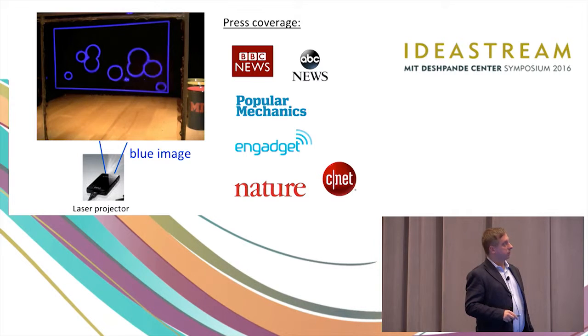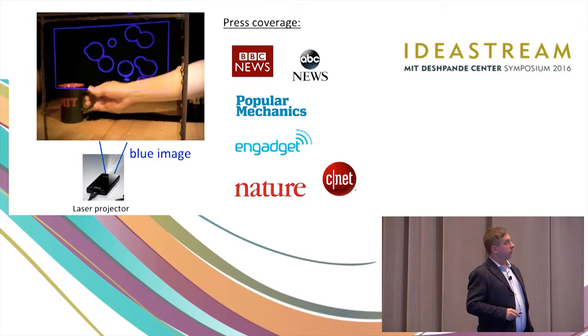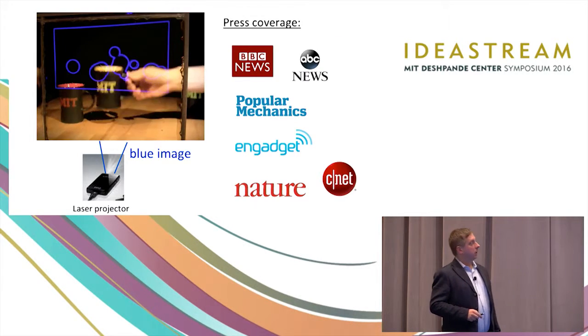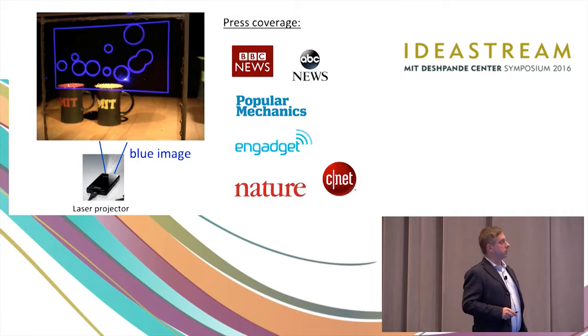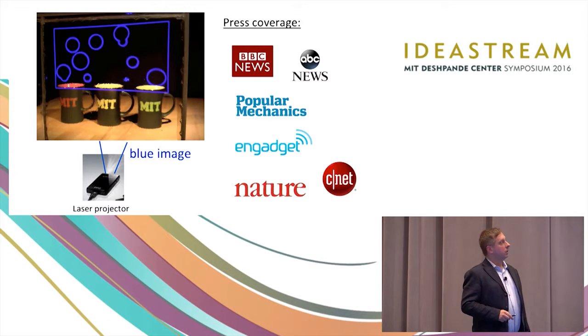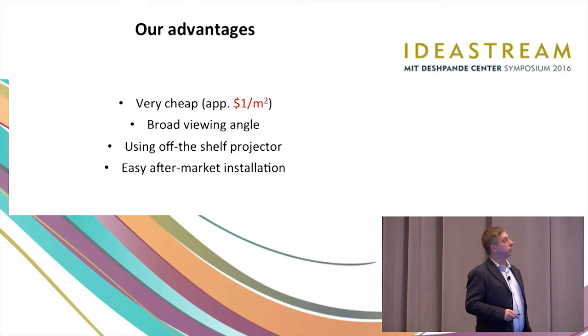So what you're seeing here is a laser projector basically projecting onto this glass and onto our glass, and then you can see the objects behind the glass. Now you can see that in the beginning we were able to do it just for blue color and also you'll see some waviness in the screen with the way how this was made. So since then, we made improvements on both of those fronts.